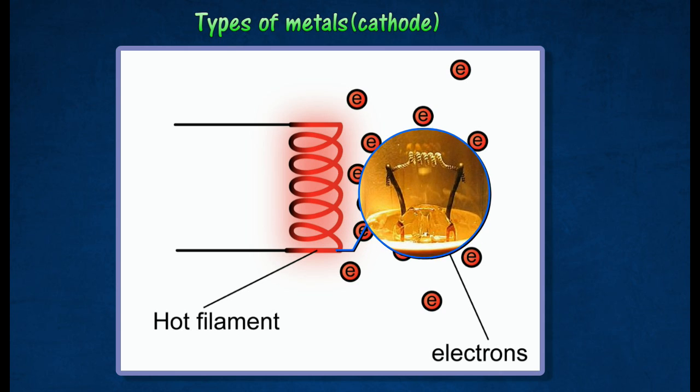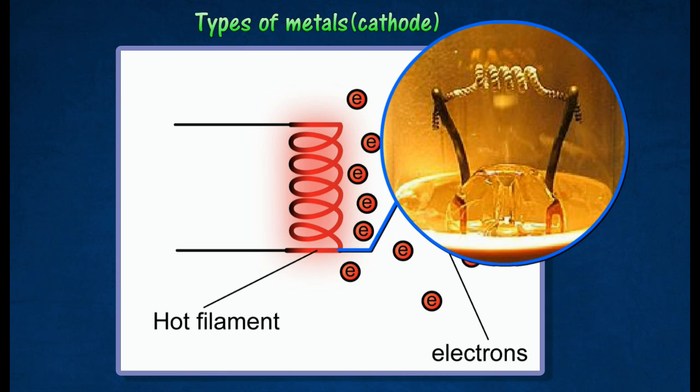The rate of thermionic emission increases by coating the metal with metal oxide. Metal oxide will decrease the minimum energy required and release electrons at a lower temperature.